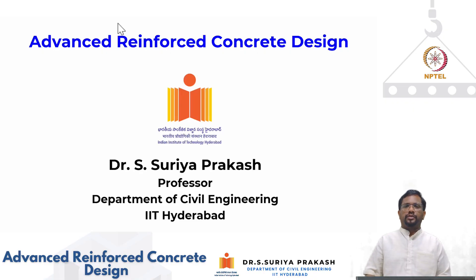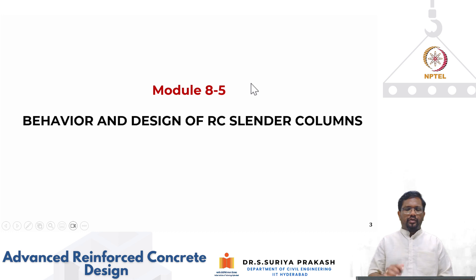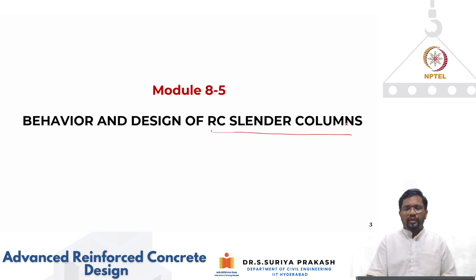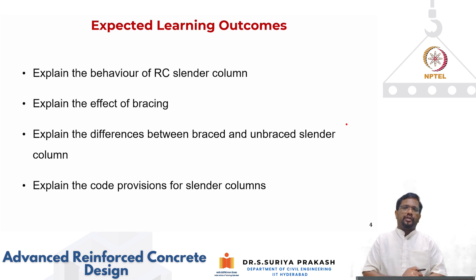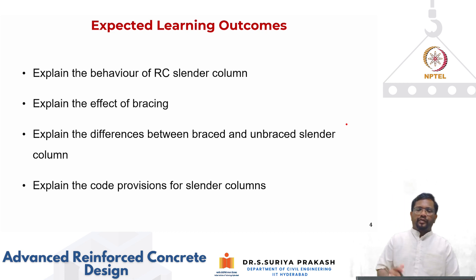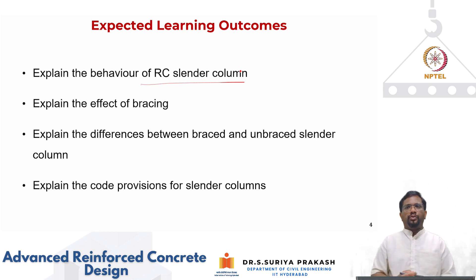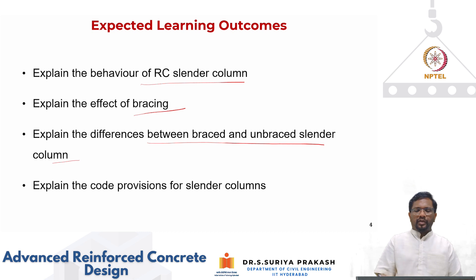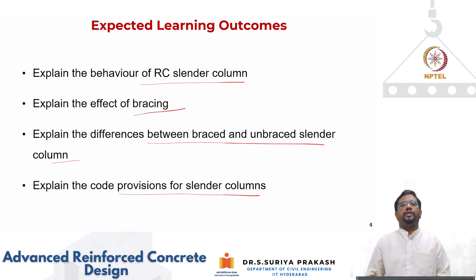Hello everyone. We will continue the discussions on columns in this part of the video. In this part of the module, we are going to talk about how we can understand the behavior and design of RC slender columns. The definition of short column and slender column was discussed in the first part. We use effective length to calculate LE by D ratios - if less than 12, it is a short column; if more than 12, it is a long column. The expected learning outcomes are: explain the behavior of RC slender columns, how slenderness is accounted in design, the effect of bracing, differences between braced and unbraced slender columns, and code provisions for design of slender columns.